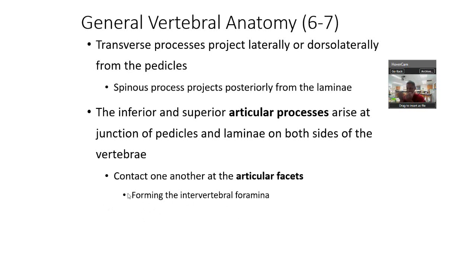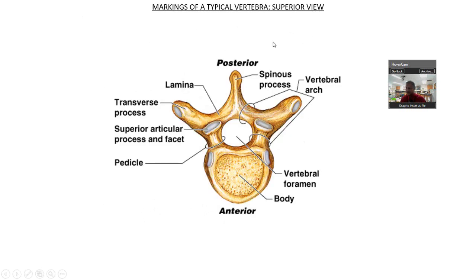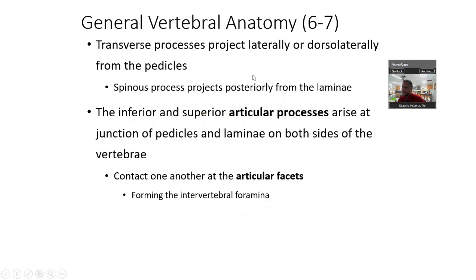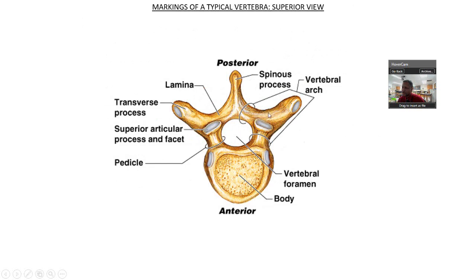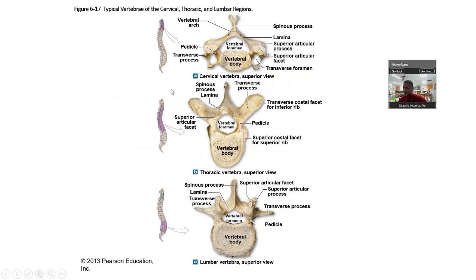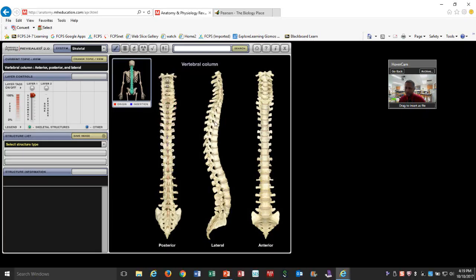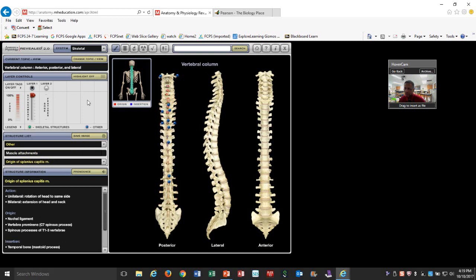Let's look at a typical vertebra. The transverse process runs lateral from the midline, and the spinous process is dorsal — so dorsal-lateral means pushing toward the dorsal/posterior side. The vertebral foramen is where your spinal cord goes through. You have superior articular facets, which are attachment points — 'articular' meaning articulation, one bone with another. Then there's the pedicle. Let's talk about the differences between the three vertebral types.